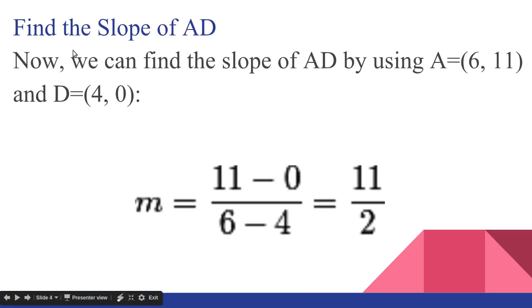Find the slope of AD. So we know that A is (6,11) and D is (4,0). So change in y would be 11 minus 0, which is 11. And change in x would be 6 minus 4, which is 2. So the slope is 11 over 2.